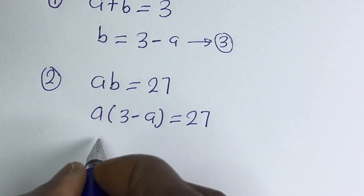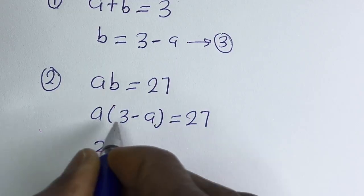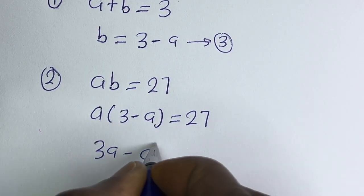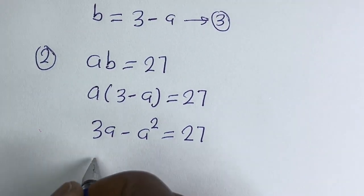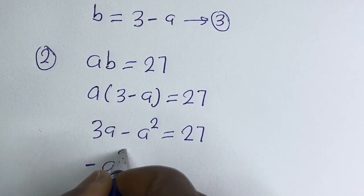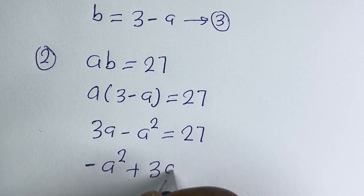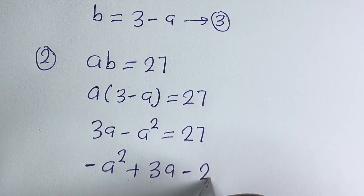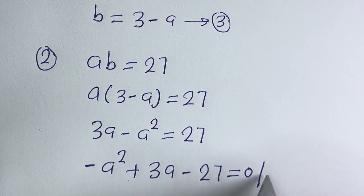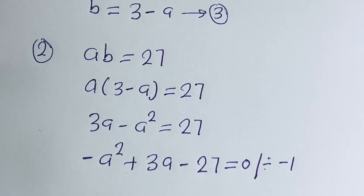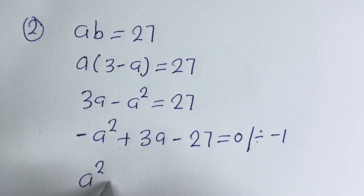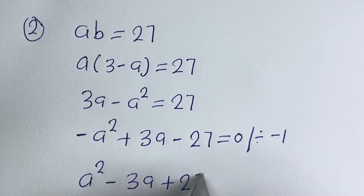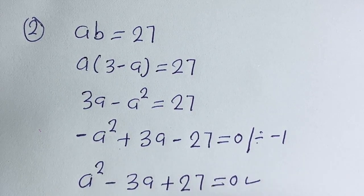A times bracket 3 minus a is equal to 27. Then we have a multiplied by 3, giving 3a minus a squared is equal to 27. This becomes minus a squared plus 3a minus 27 is equal to 0.